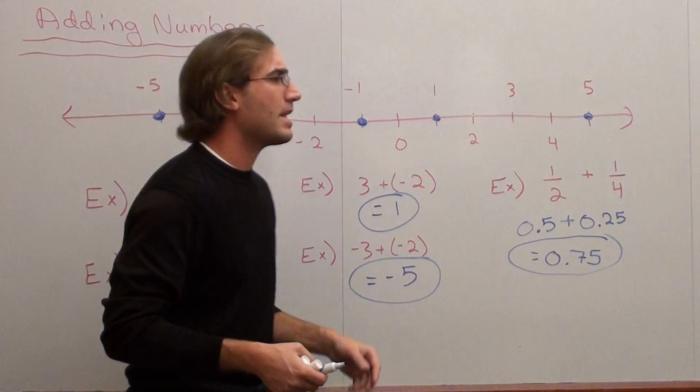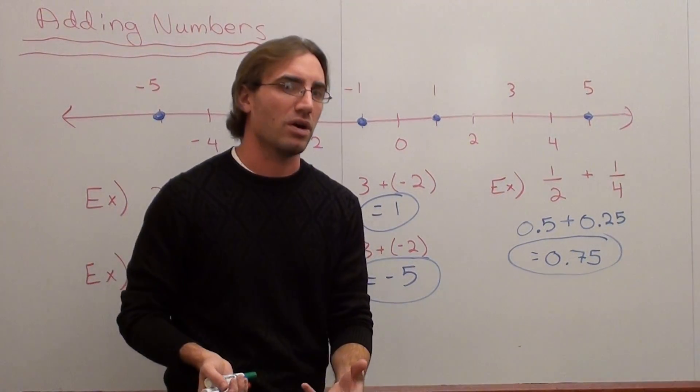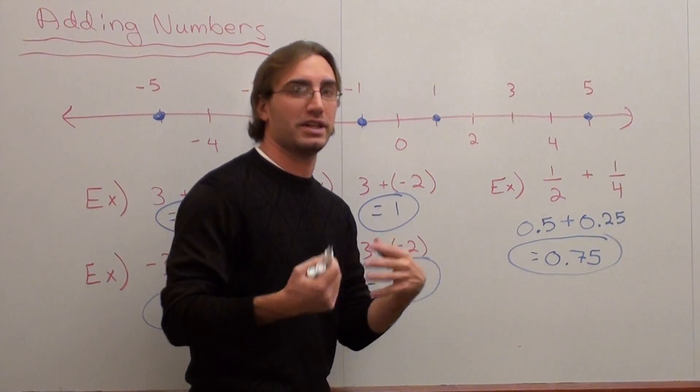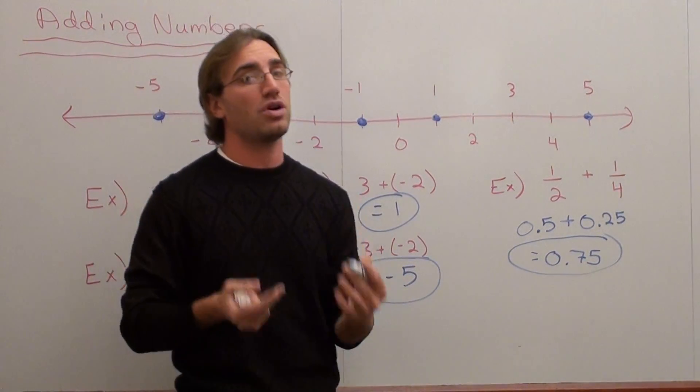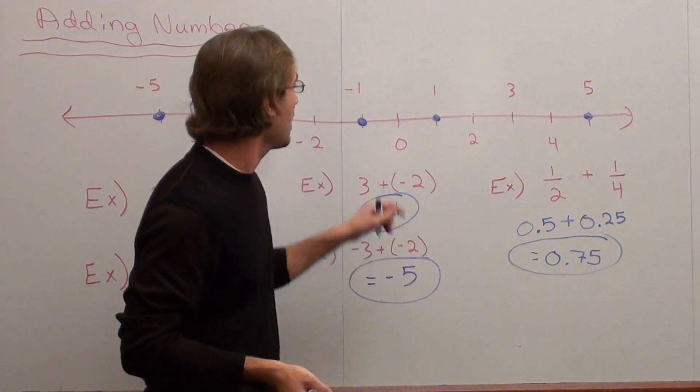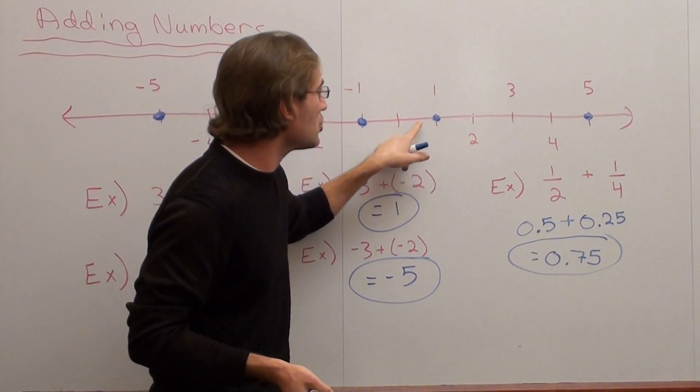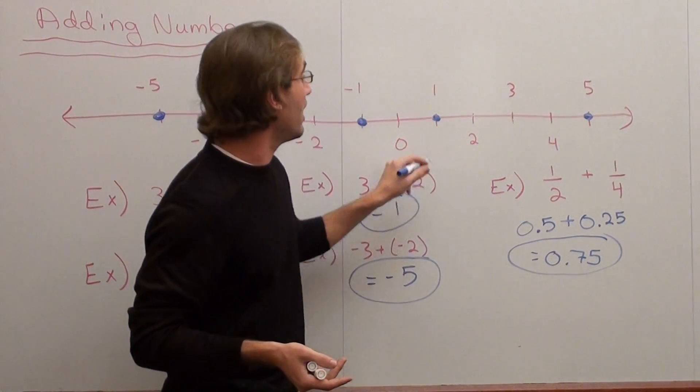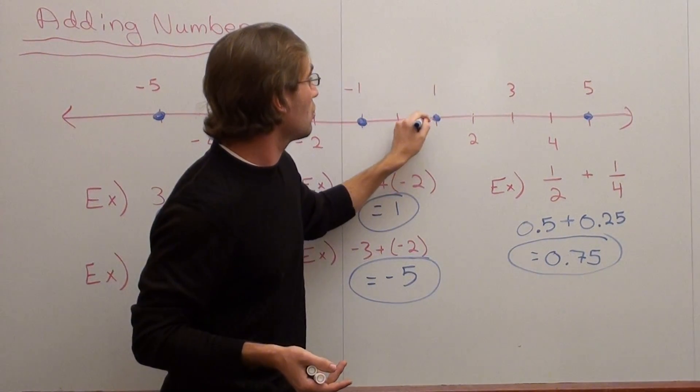Now 0.75 is bigger than 0 but it's less than 1, and it's closer to 1 than it is to 0. You don't have to be perfect on the number line, but you should be approximately close to where you're supposed to be. So between 0 and 1, closer to 1, I would say a good guess for 0.75 is right there.